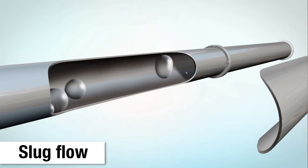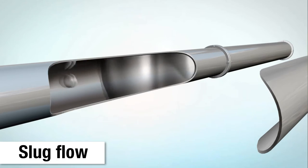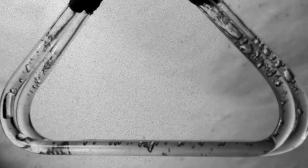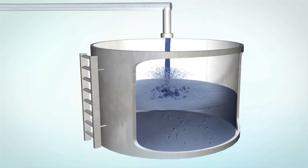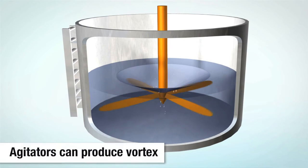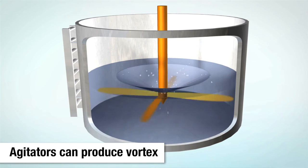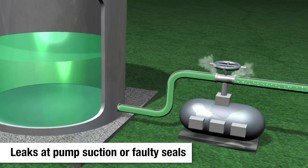Slug flow is usually unintentional and can occur as a result of a process upset in tank farm and oil well applications, where there are periodic, coalesced bubbles. Slug flow can occur as a result of long drops into tanks, where splashing occurs when the stream enters the liquid. The farther the liquid falls, the more air is entrained. Agitators can produce a vortex that entrains air into a liquid, especially when tank levels are low. Leaks on the suction side of pumps or in the pump seals themselves can also introduce air into a pipeline.